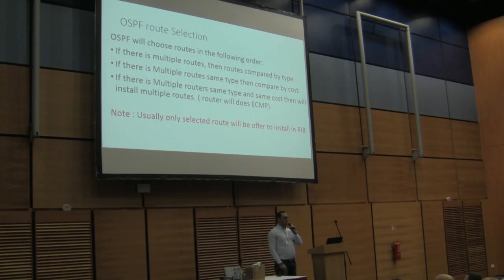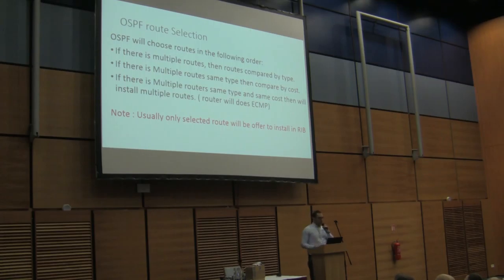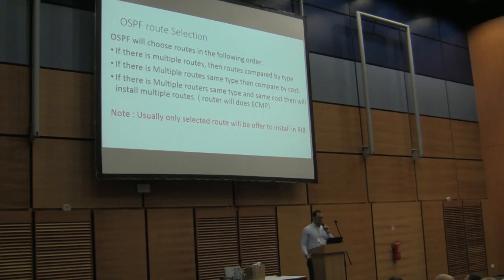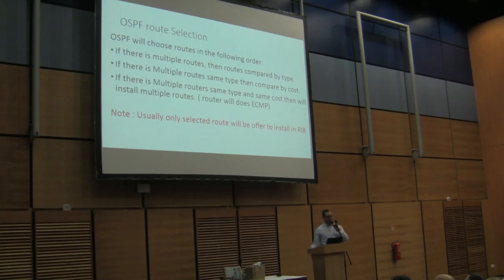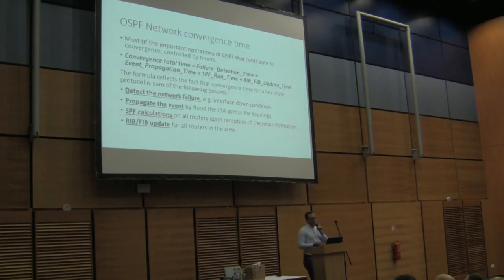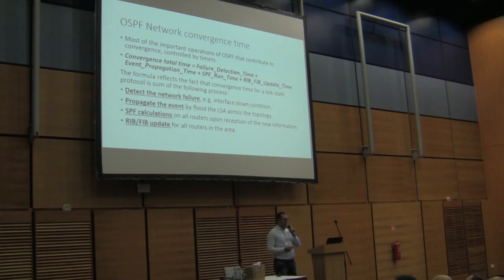When there are multiple routes, OSPF compares by type — which type is preferred. If there are multiple routes of the same type, OSPF selects based on cost. If multiple routes share the same type and same cost, all routes are installed in the routing table and the router performs ECMP. Normally, only the selected best route is offered for installation into the RIB.